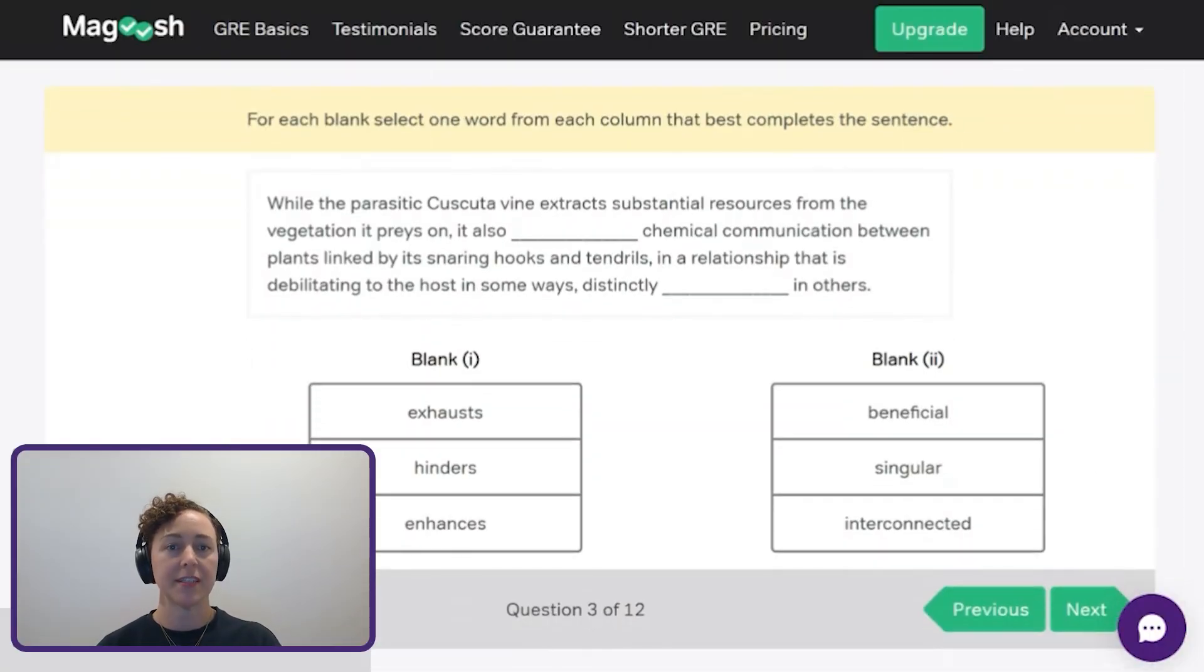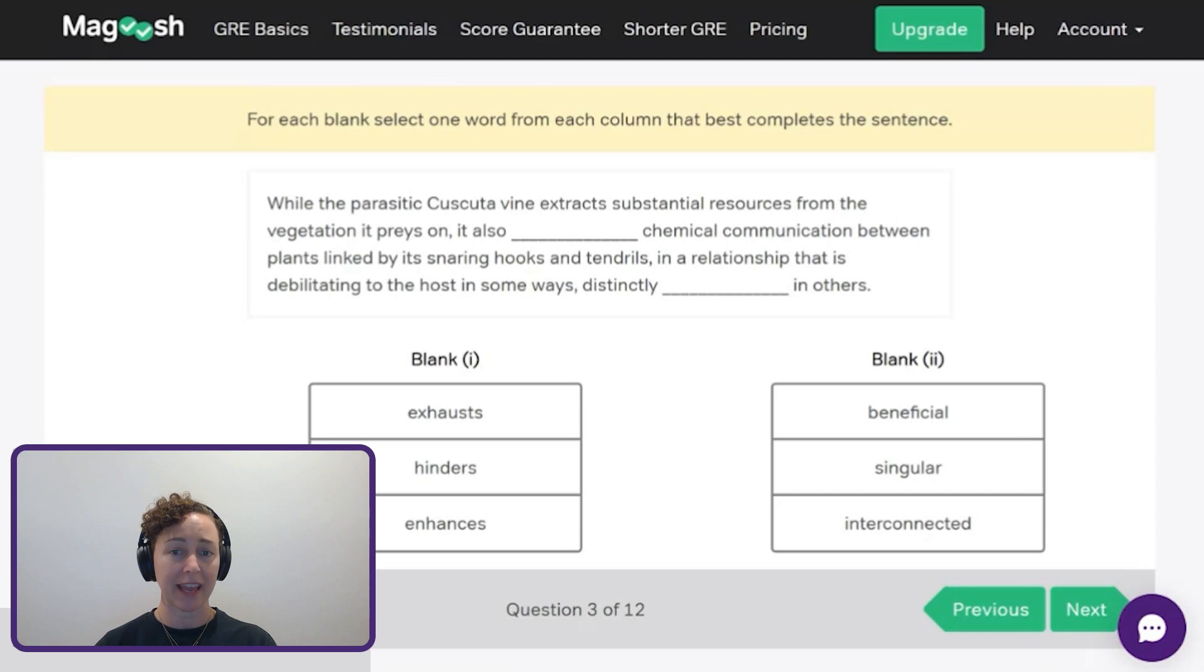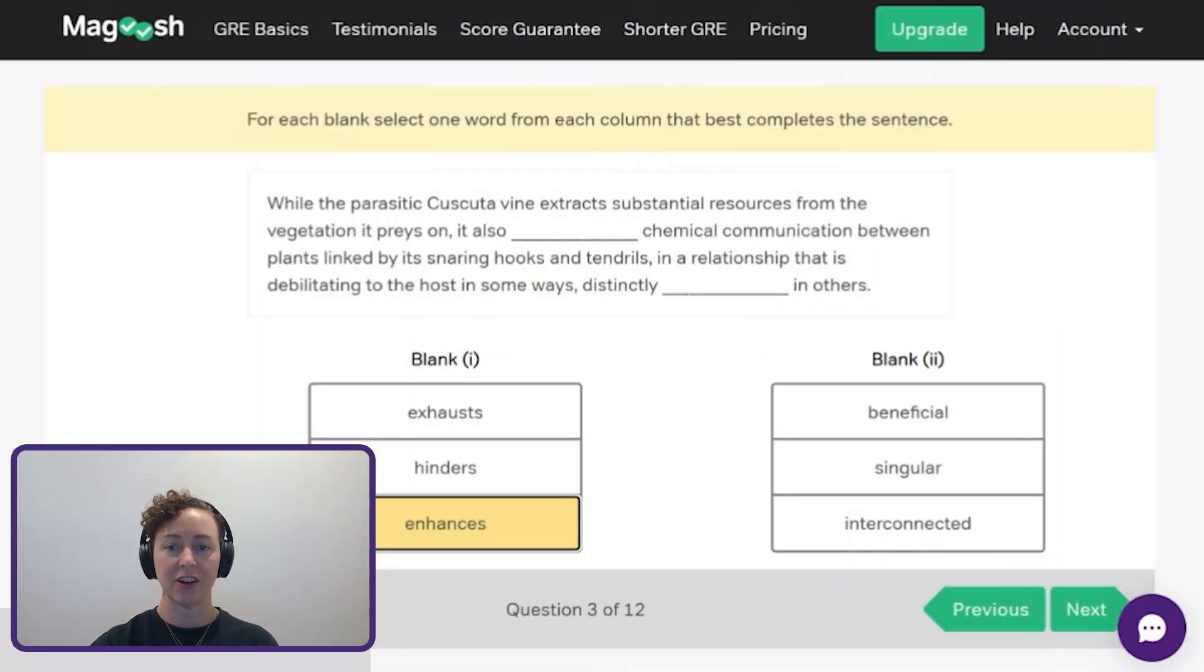Another two blank text completion. While the parasitic cascuta vine extracts substantial resources from the vegetation it preys on, it also blanked chemical communication between plants linked by snaring hooks and tendrils in a relationship that is debilitating the host in some ways distinctly blank in others. So this begins with while. So I know this is setting up some kind of contrast. There's a shift here. It's parasitic. It extracts substantial resources, the vegetation it preys on. But because this begins with while, it must also do something good or something helpful. So if we look over at the options for the first blank, the closest thing we have to something good or something helpful is enhances. Second blank. This relationship, again, we have a contrast. It's debilitating in some ways and distinctly not debilitating in other ways. So it's got to be the opposite of debilitating. So helpful. It's a positive thing. And what I've got there in terms of what really clearly works for this is beneficial. I'm ready to move on to number four.